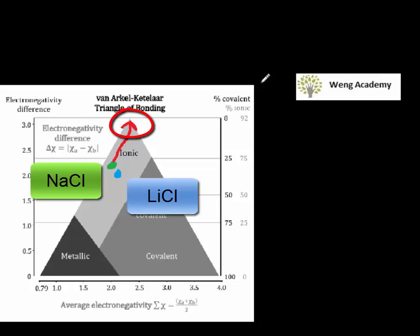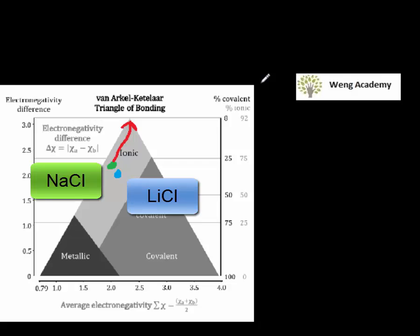If you go towards the other end of the triangle, that point has a more metallic character. And if you go to the other point, that has a more covalent character. So you would say that lithium chloride has more of a covalent character — slightly more sharing — and sodium chloride is the more ionic.